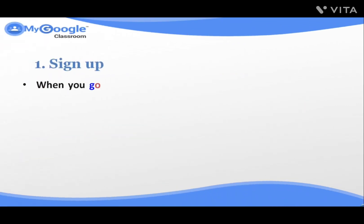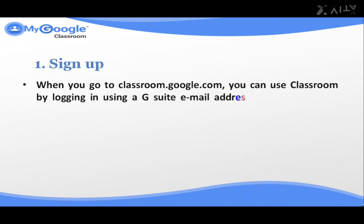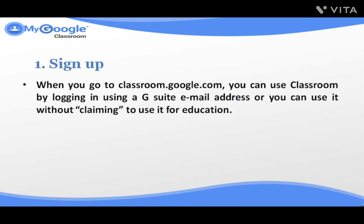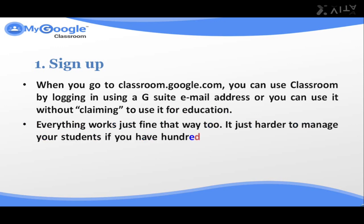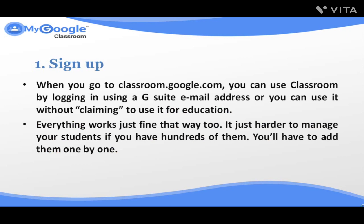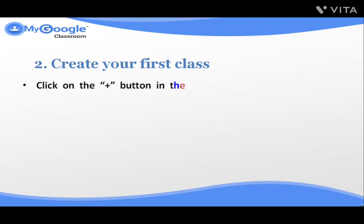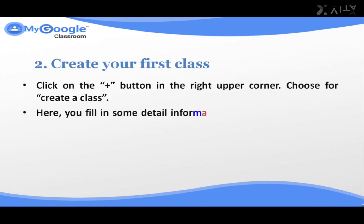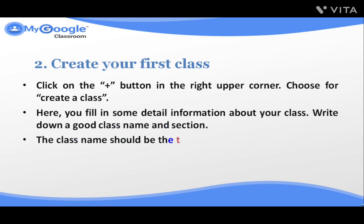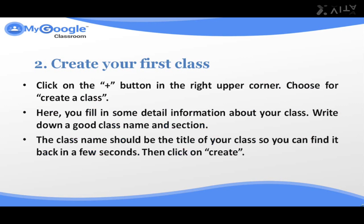Everything works just fine that way too — it's just harder to manage your students if you have hundreds of them, as you'll have to add them one by one. Number two: Create your first class. Click on the plus button in the upper right corner and choose Create a Class. Fill in some detailed information about your class — write down a good class name and section. The class name should be the title of your class so you can find it quickly. Then click Create. Number three: Invite students to your class. Once you have created your class, you can invite your students — let them sign in using the Google Classroom app by entering the unique code you gave them, which you'll find in your created class.